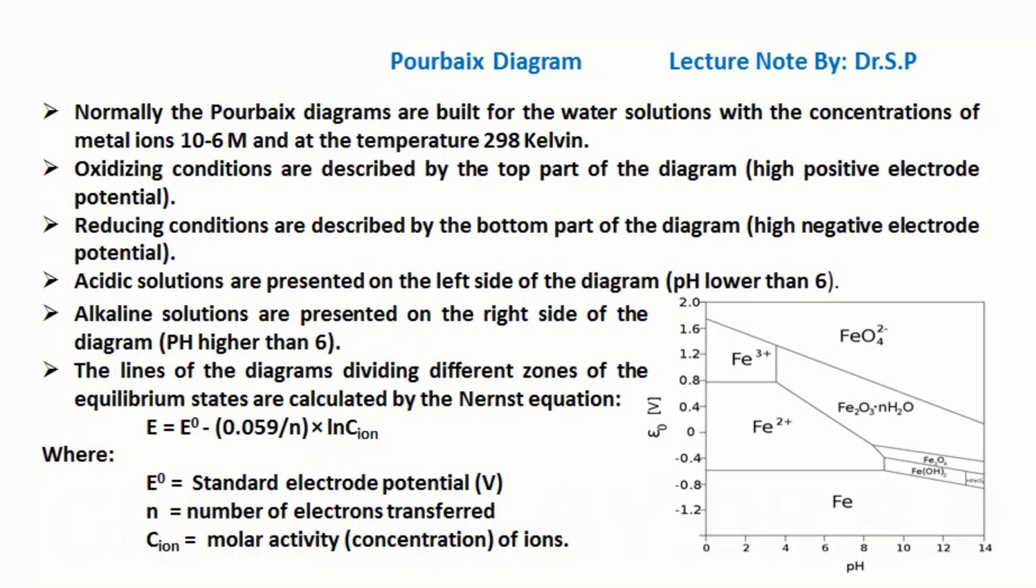Oxidizing conditions are described by the top part of the diagram (high positive electrode potential). Reducing conditions are described by the bottom part of the diagram (high negative electrode potential). Acidic solutions are presented on the left side of the diagram (pH lower than 6).